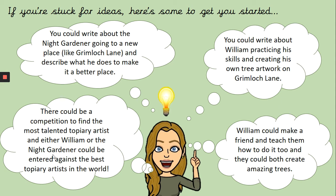You could write about William practising his skills and creating his own tree artwork on Grimlock Lane. William each night could go out and start working on bigger trees and different designs — he could just keep practising. He could talk about what he finds hard, the different things that he finds interesting or easy, and how he figures out what he's going to do next. Lots of different things you could do about William practising this skill.